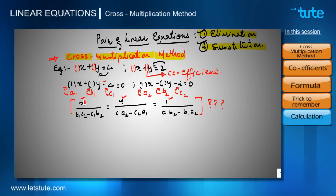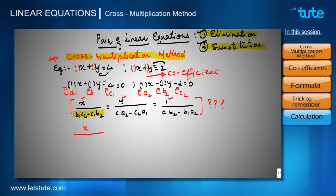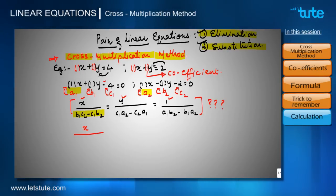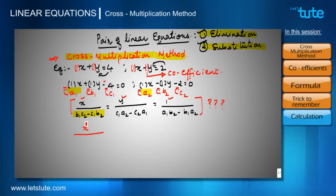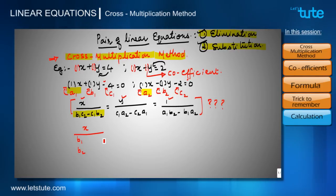Let's start with the x term. Below x you can see certain terms. In the equations, the coefficients of x are a1 and a2, but below x there are no coefficients of x — you can't see a1 and a2 below x. So how do we get this denominator? Apart from a1 and a2, we have the other constants: b1, b2, c1, and c2.